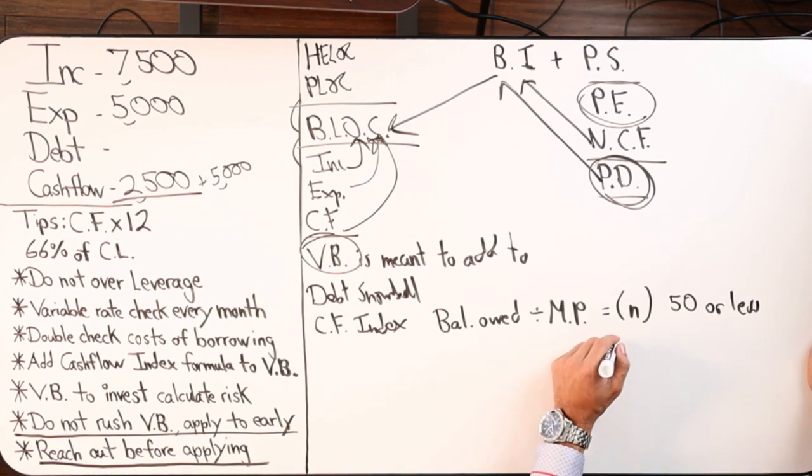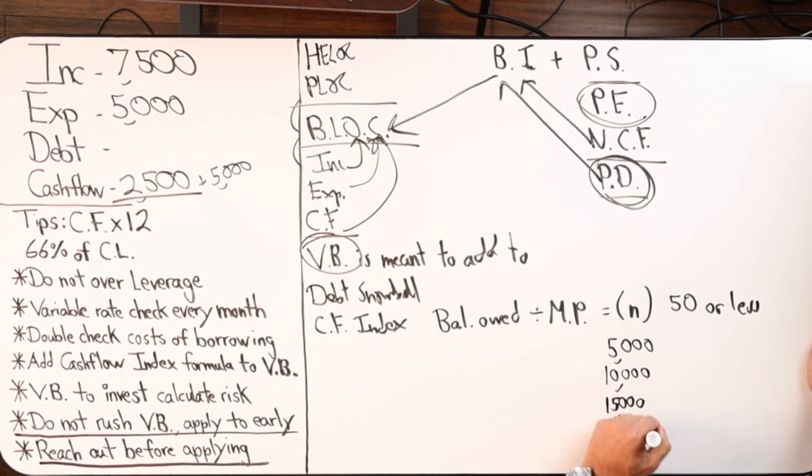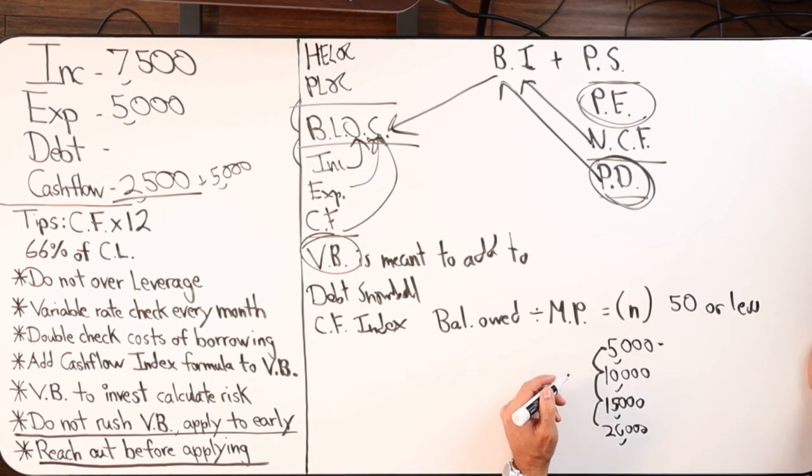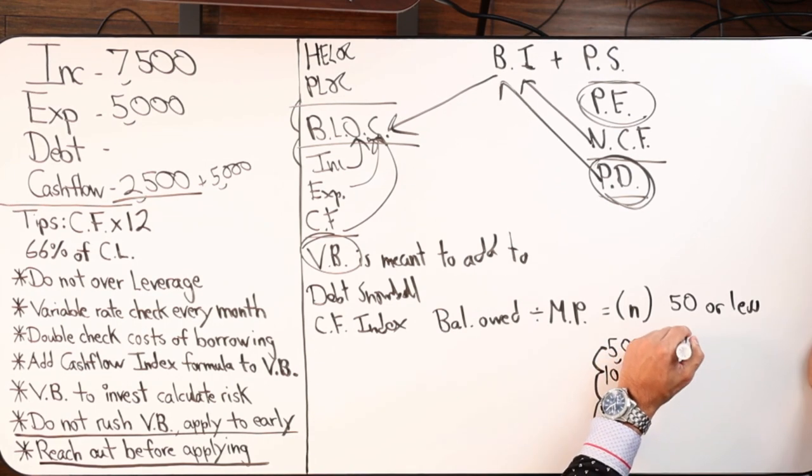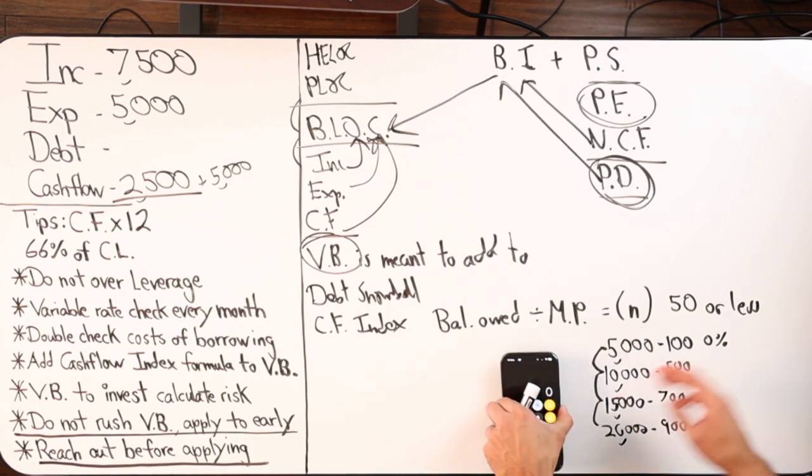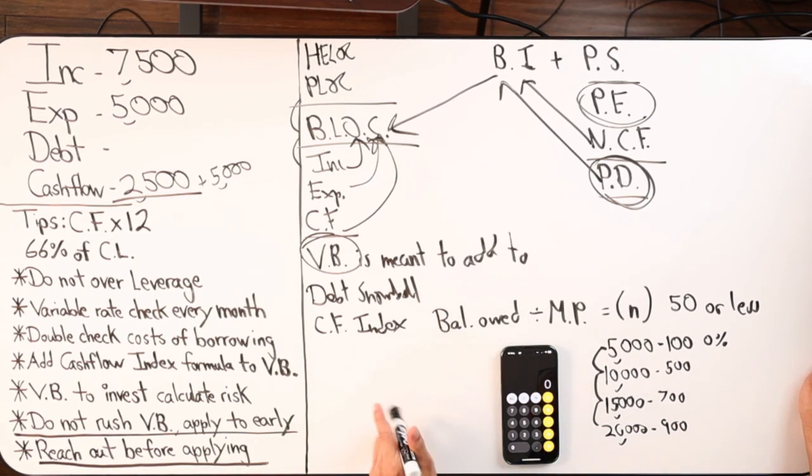If you had a $5,000 debt, $10,000, $15,000, and $20,000, snowball says you would pay this because it's the smallest debt, then work your way up creating a snowball effect. Now, what if this $5,000 debt only had a payment of $100 and the interest rate was 0%? And let's say this debt is $500, this one is $700, this one is $900. What cash flow index will probably tell us—sometimes cash flow index will line up with snowball and that's cool.